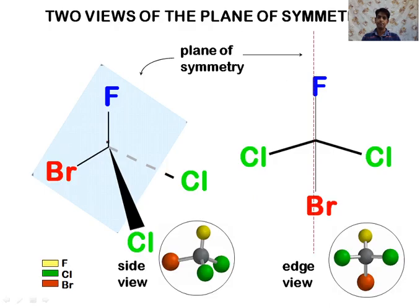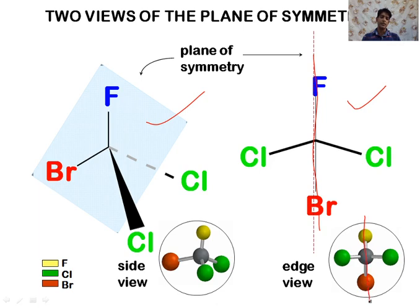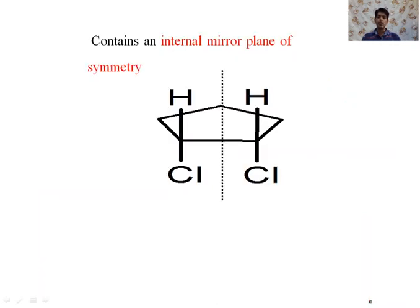Let us discuss the example of a plane of symmetry in the case of molecules. Here is a molecule that has a plane of symmetry. In this figure we can clearly see the plane of symmetry which divides the molecule into two equal parts. This is also an example of a compound which has a plane of symmetry — you can observe the imaginary plane.